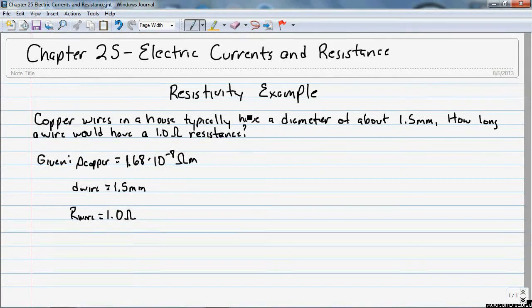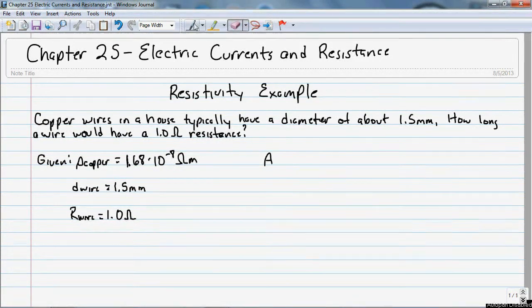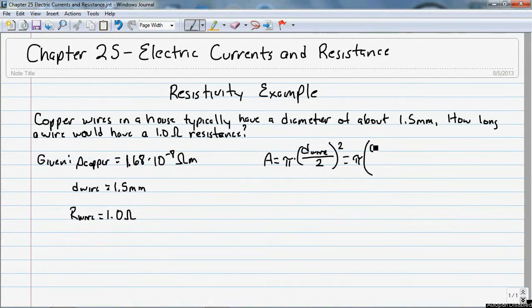So the first thing we need to do is find the cross-sectional area. So A is equal to pi times the diameter of the wire over 2. So that's equal to pi. And then we have 1.5 millimeters is going to be 0.0015 meters.